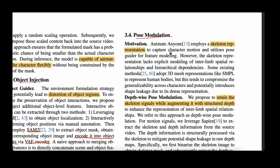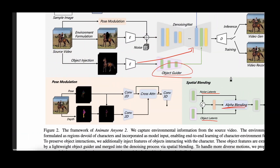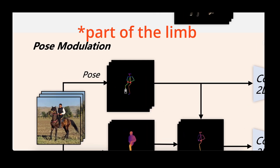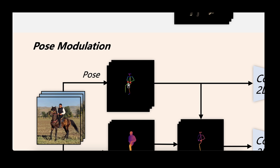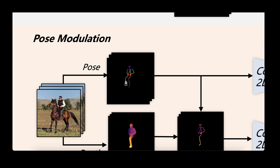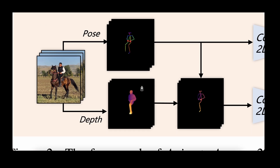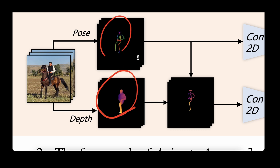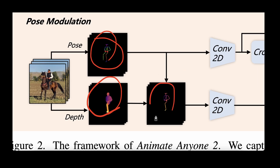The next novelty is pose modulation. The previous Animate Anyone used only skeletal relationships to capture character motion, but the problem with skeletal representation is that it lacks explicit modeling of inter-limb spatial relationships — for example, a leg can only move in certain directions relative to another limb, and this relationship is not captured by pose alone. They propose using depth information on top of pose information, using a separate network to extract depth, then applying the pose as a mask and using only the information where the pose actually exists, ignoring the rest.